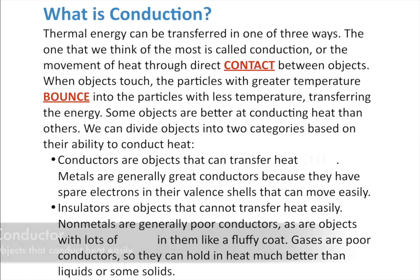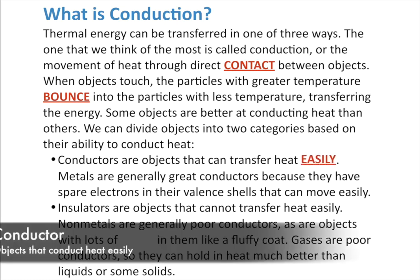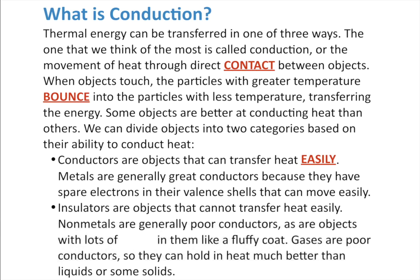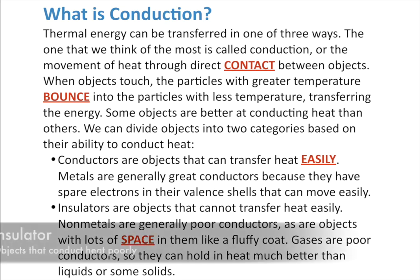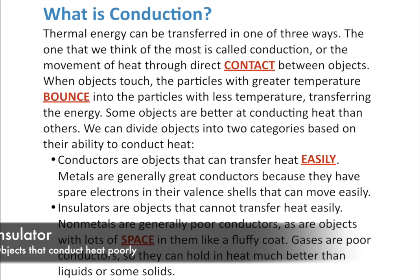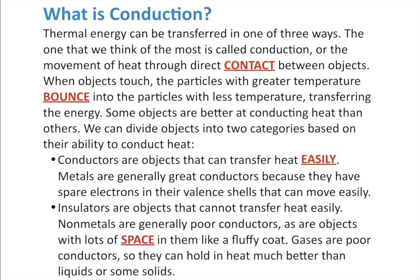We classify objects by how they handle conduction. Conductors are objects that transfer heat easily — thermal energy passes right through them. Metals are generally great conductors of heat because they have spare electrons in their outer valence shells that can jump out and transfer thermal energy. Insulators, on the other hand, can't transfer heat easily. Non-metals are poor conductors because their valence shells are full. Objects with lots of space — like a fluffy coat or gases — are also good insulators.